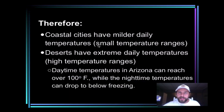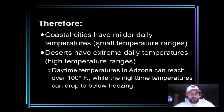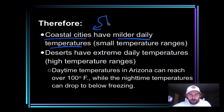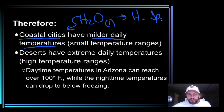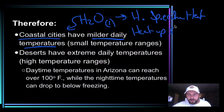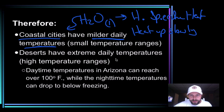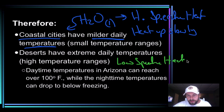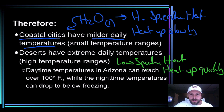We can apply this to cities around the country or around the planet. Coastal cities are going to have milder temperatures because they are near water, H2O liquid, which has a high specific heat — so they heat up slowly. Versus deserts, which have a low specific heat, so they heat up quickly. We can see that daily temperature ranges can change quite a bit depending on whether you're near water or just surrounded by land.